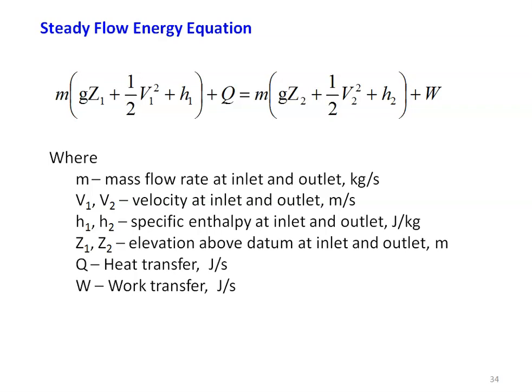Here M equals the mass flow rate in kilograms per second. V1 and V2 are the velocities at the inlet and outlet in meters per second. H1 and H2 are the specific enthalpy at the inlet and the outlet in joules per kilogram. Z1 and Z2 are the elevation above the datum at the inlet and the outlet in meters. Q is the heat transfer in joules per second, and W is the work transfer or work done in joules per second.